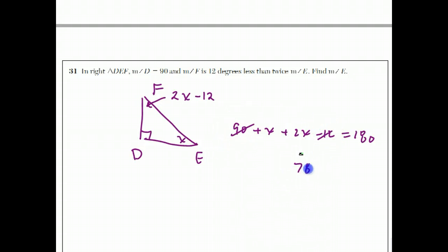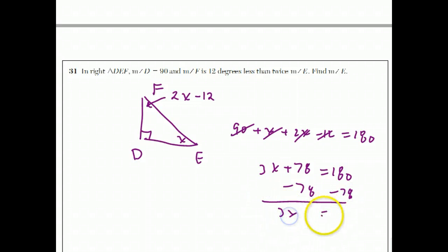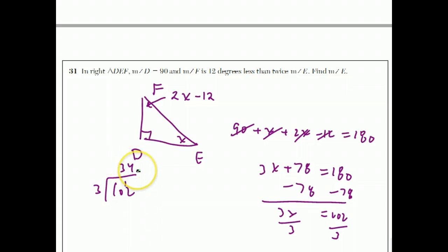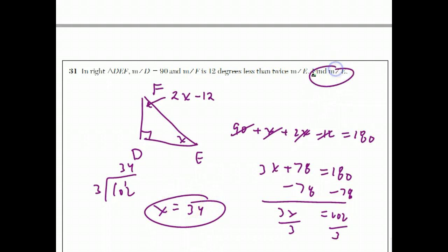90 minus 12 is 78. X plus 2X is 3X, so we have 3X plus 78 equals 180. Subtract 78 from both sides to get 3X equals 102. Divide both sides by 3: 102 over 3 is 34. That's the answer. Always be careful — if they asked for angle F instead, the answer would be 2X minus 12, which is 2(34) minus 12, which is 56, not 34.